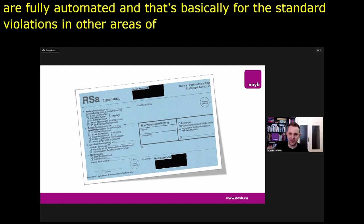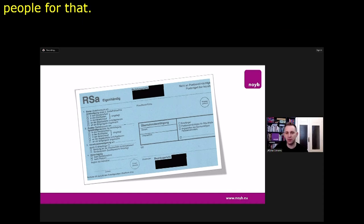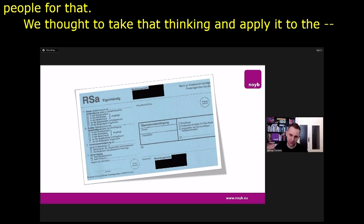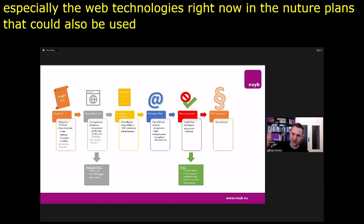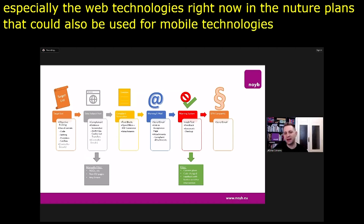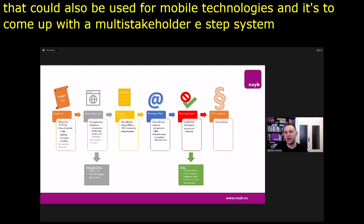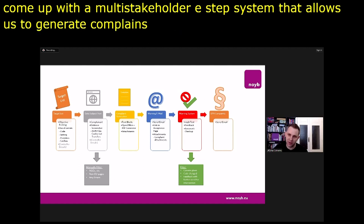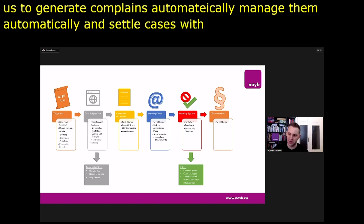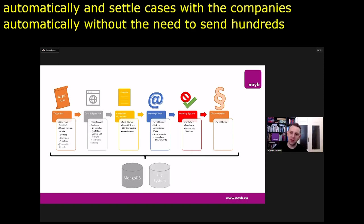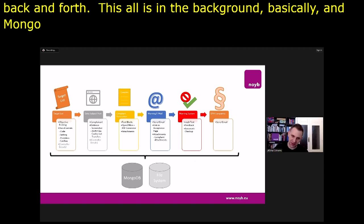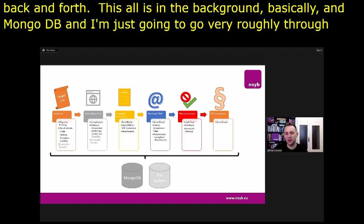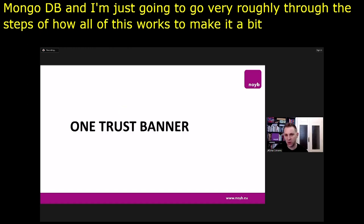The idea was to think about this like a speeding camera. In Austria, if you speed, the licence plate is automatically read, the speed is automatically calculated, and it's automatically transferred into a ticket mailed to you with a code to pay the fine — there is no human intervention in these legal procedures. We thought to take that thinking and apply it to web technologies, coming up with a multi-step system that allows us to generate complaints automatically, manage them automatically, and settle cases with companies automatically.